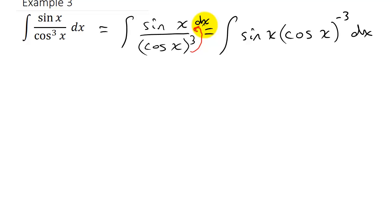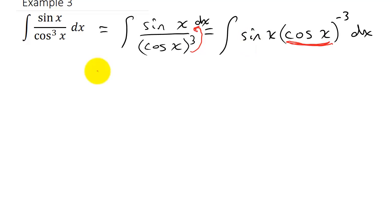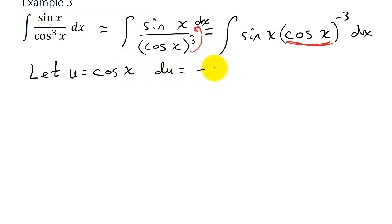Using u-substitution, I notice cosine x is raised to a power. I'll let u equal cosine x. The derivative of cosine x is negative sine x, which gives us something close to what we have — everything except the negative sign. We can take care of that. So u equals cosine x, and du equals negative sine x dx.